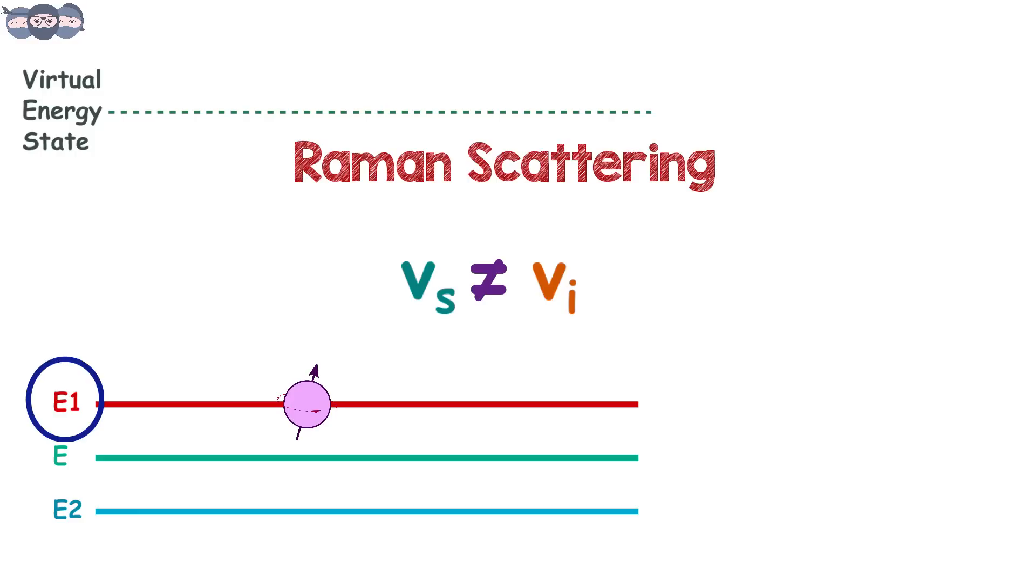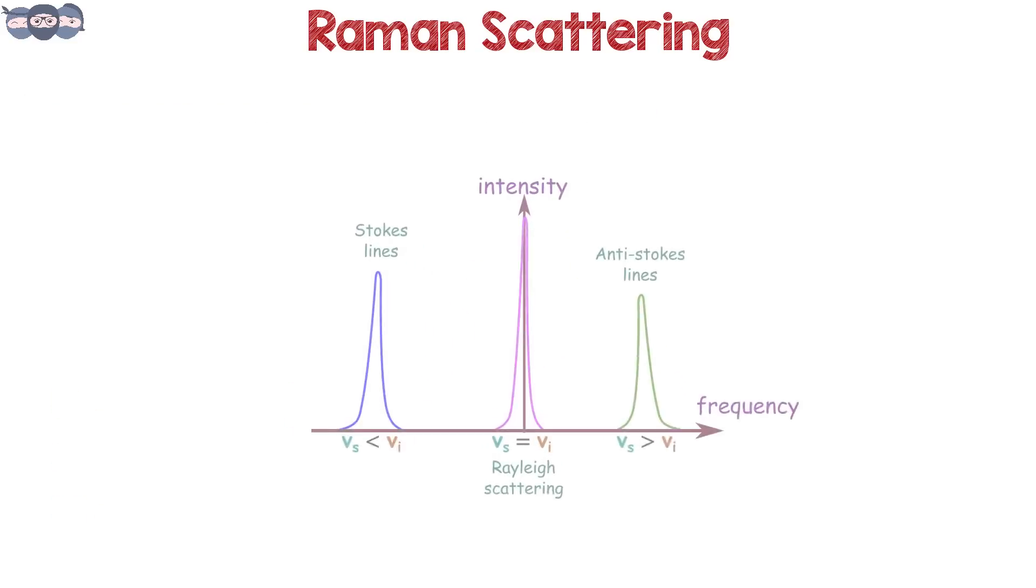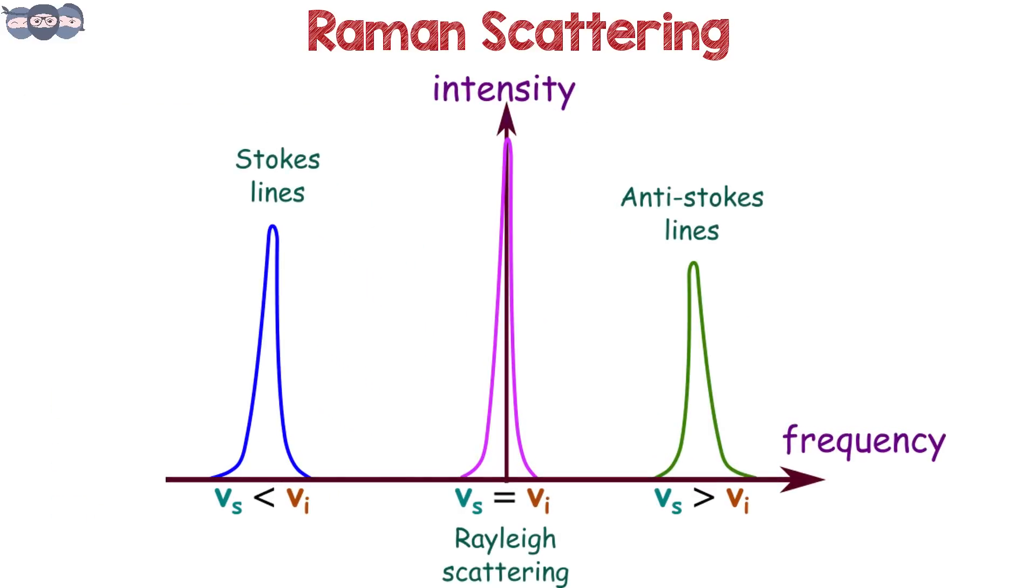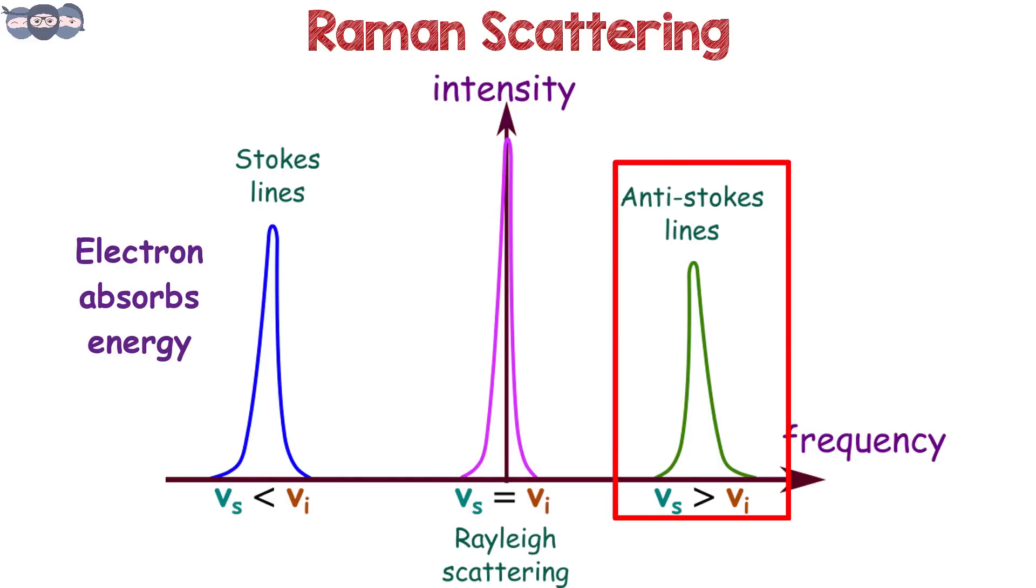Depending upon the final energy of the electron or final vibrational level of electron, Raman scattering can be separated into Stokes line and anti-Stokes line. If the frequency of scattered photon is less than the frequency of incident photon, Stokes lines are observed on Raman spectrum. This happens when the electron absorbs energy. Similarly, when frequency of emitted photon is greater than incident photon, anti-Stokes lines are observed. This means that energy is released by the electron.